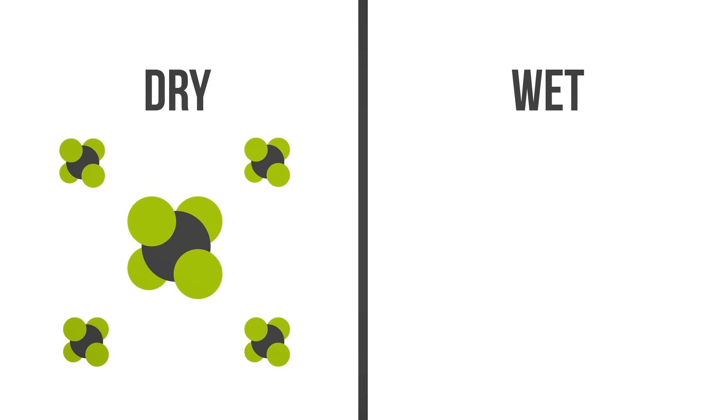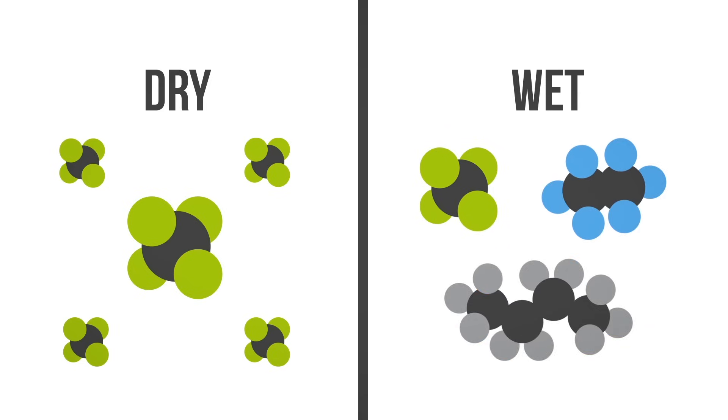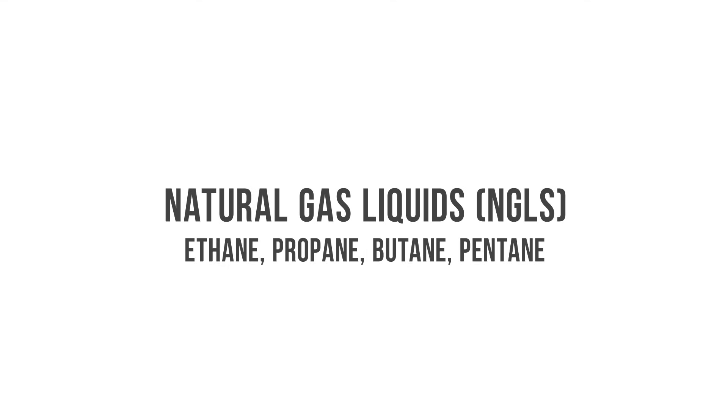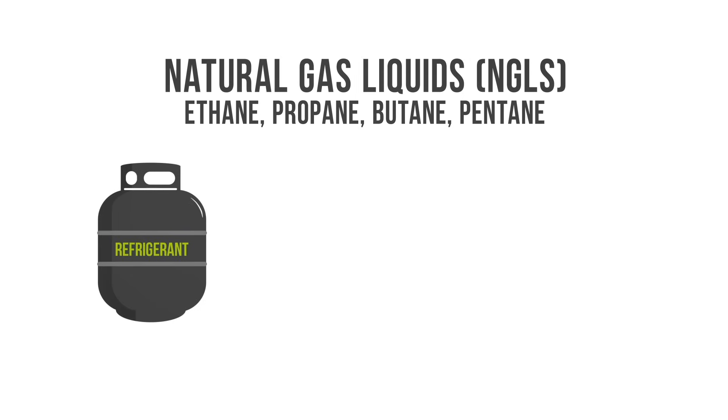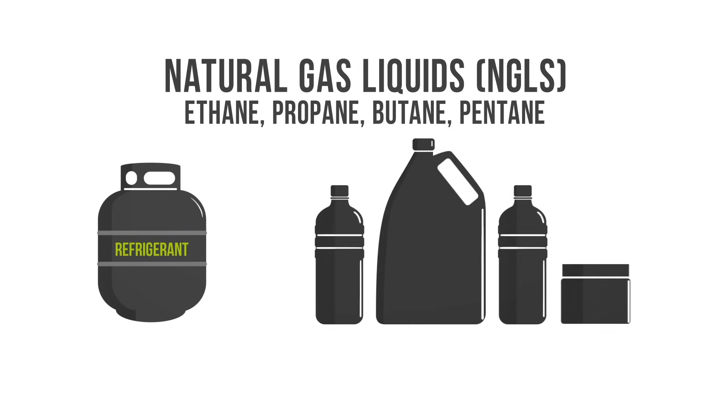Natural gas can be categorized as dry or wet. Dry gas is essentially gas that contains mostly methane. Wet gas, on the other hand, contains compounds such as ethane and butane in addition to methane. These natural gas liquids, or NGLs for short, can be separated and sold individually for various uses, such as in refrigerants and to produce products like plastics.